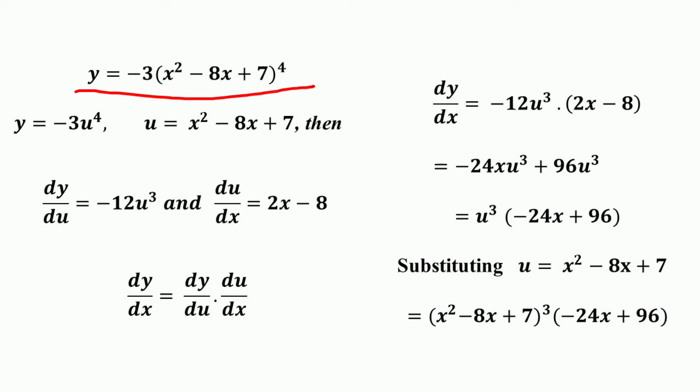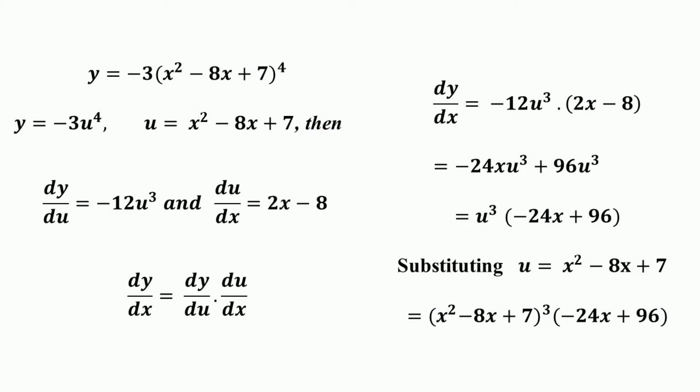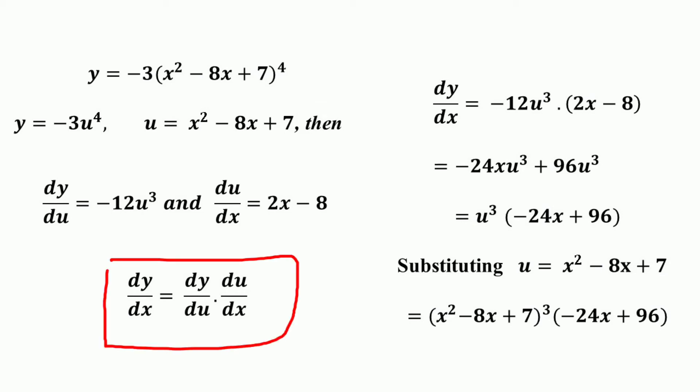Consider another example: the function y equal to -3(x² - 8x + 7)⁴. We can write this as y equal to -3u⁴ where u equals x² - 8x + 7. So we have written the given function as a composite function — y in terms of u and u in terms of x. Then the derivative dy/dx equals dy/du multiplied by du/dx.